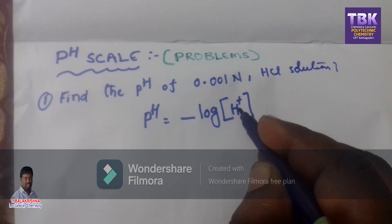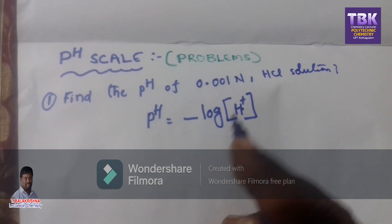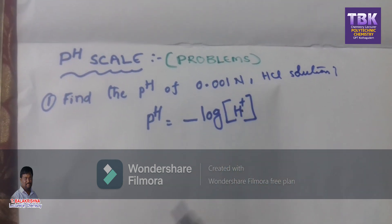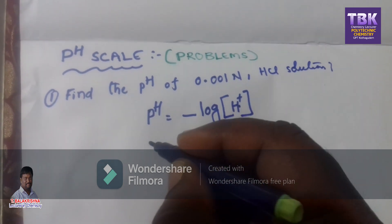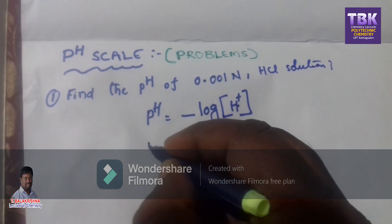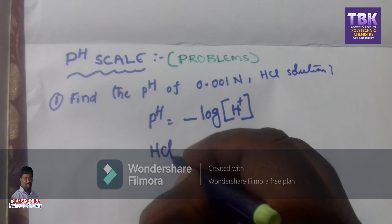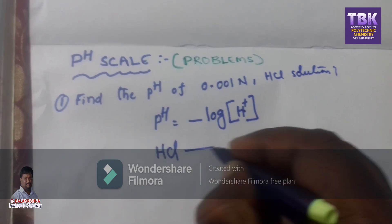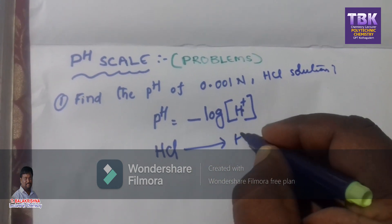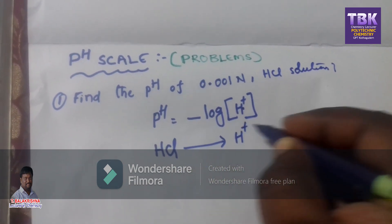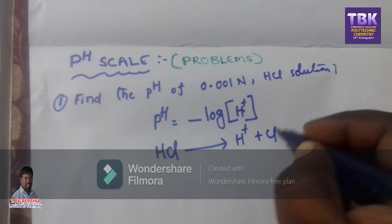The H⁺ ion concentration is necessary. We can substitute H⁺ ion. First, write the molecular formula: HCl splits into H⁺ ion plus Cl⁻ ion.